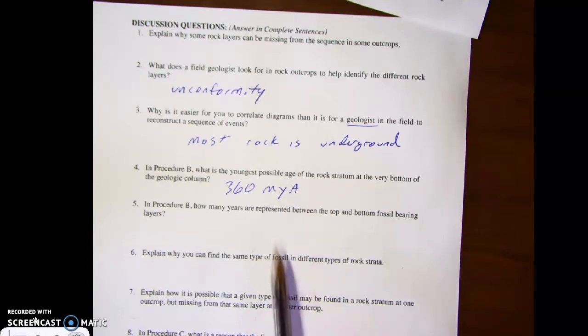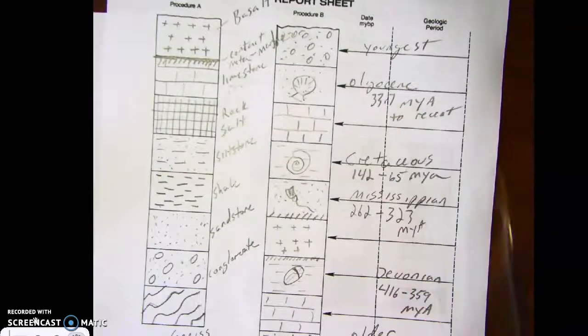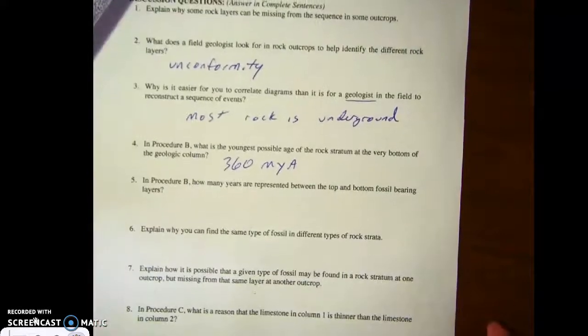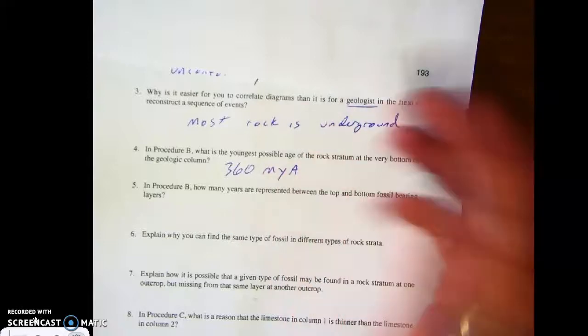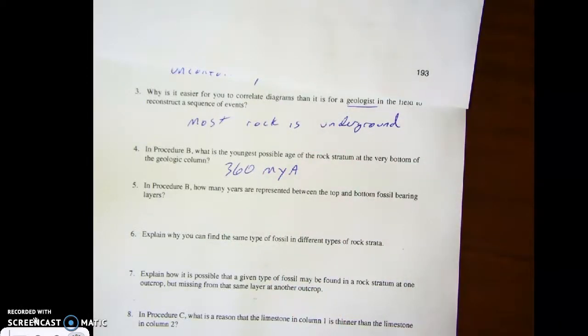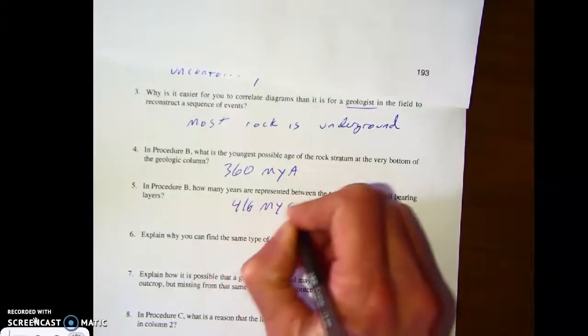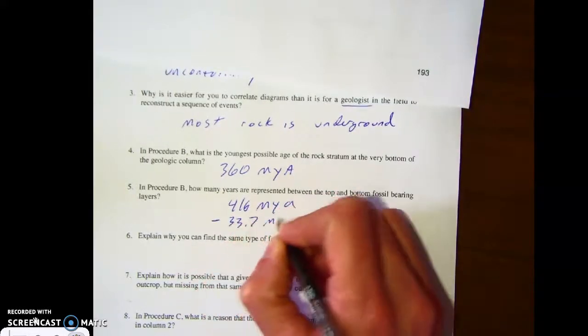And then it says in procedure B, how many years are represented between the top and bottom fossil bearing layers? So if we look at the fossil on the top, up here, 33.7. Fossil at the bottom would be, well, the oldest would be 416. Creatures don't live and die in one year, but roughly, we would take 416 million years and subtract that from 33.7 to get the answer there.